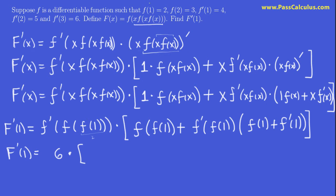How about over here? f of 1 is 2, so this is really f of 2. What is f of 2? It's 3. So this part here is just 3, plus f of 1 again is 2, f prime of 2 is 5 — a number we haven't used yet — and f of 1, as we saw, is 2, and f prime of 1 is 4.